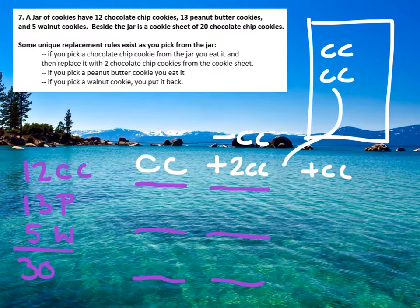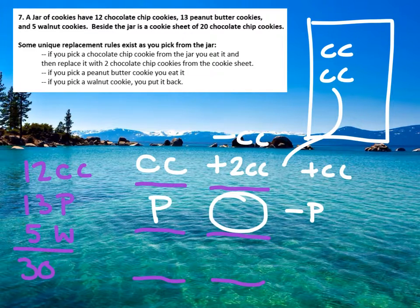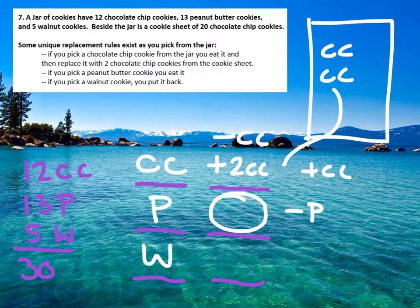If you pick a peanut butter, you basically eat it, so you're down one peanut butter. So when you go to make that second pick, you are down one cookie, down one peanut butter. If you pick the walnut, you just put it back — you put the walnut back, and you are even.